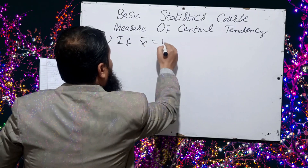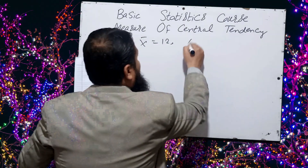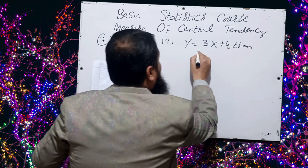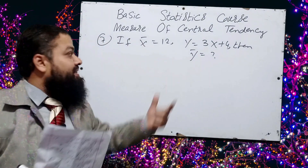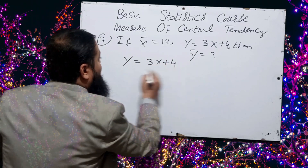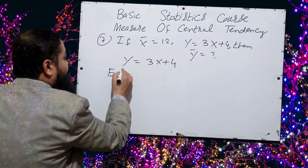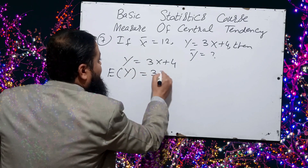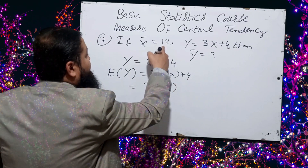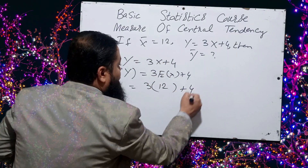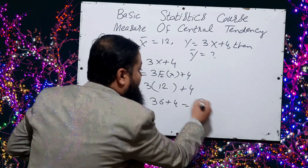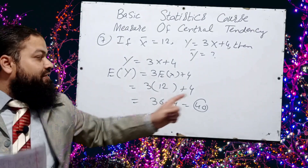Question number seven: if x-bar equals 12 and y equals 3x plus 4, then y-bar equals? Applying expectation on both sides: expectation of y equals 3 times expectation of x plus 4. That gives 3 times 12 plus 4, which is 36 plus 4 equals 40. So 40 is the correct option — a very important MCQ.